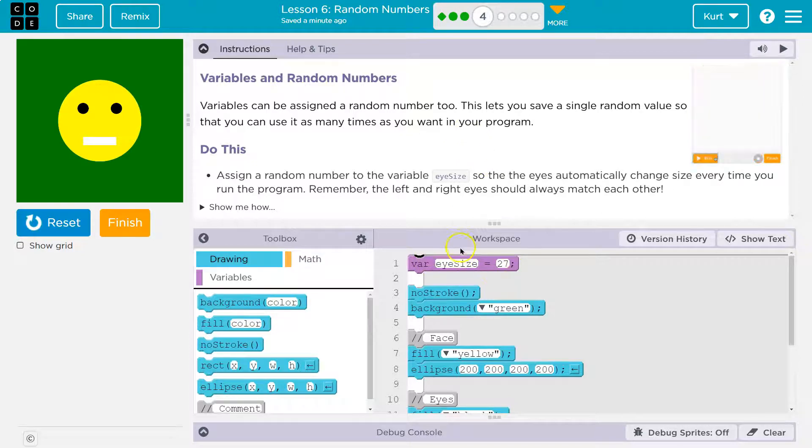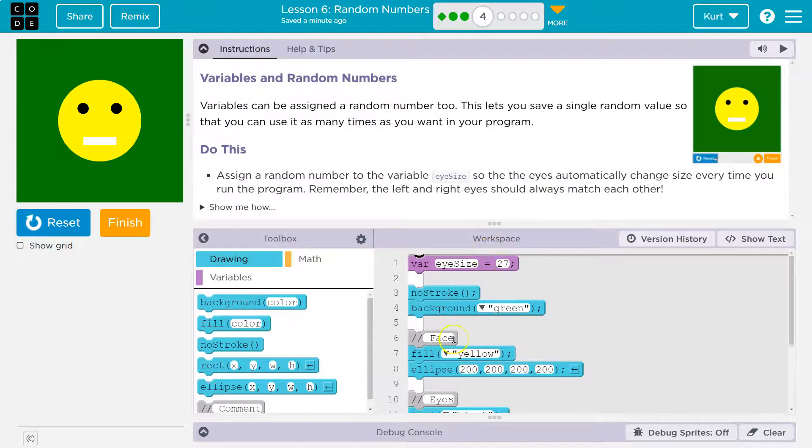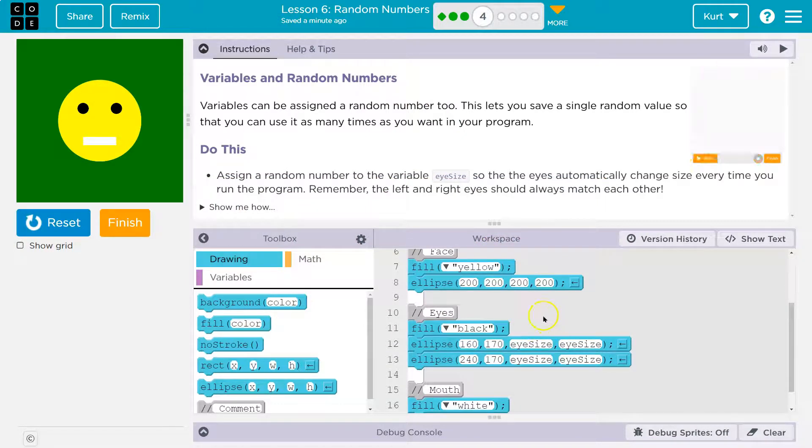Yeah, so a variable, right? Variable iSize here is equal to 27. We could also have it equal to some random number. And that means once we have a variable equal to a random number, we can use it in different places by writing the variable name.